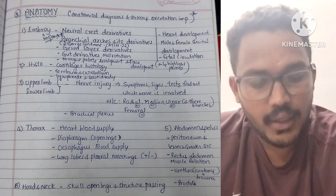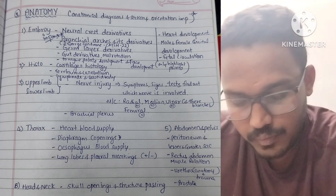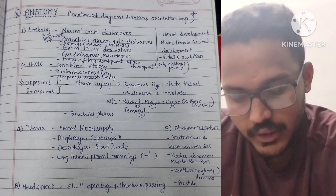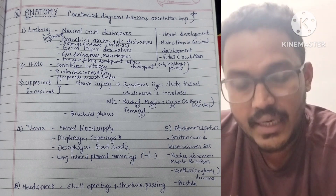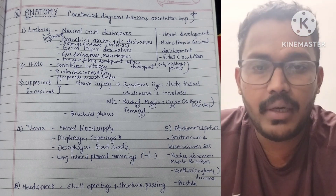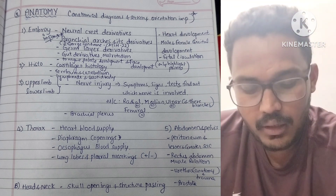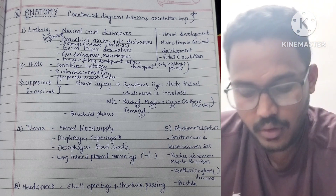In the histology part, histology of cartilages, cerebrum, cerebellum, lymph node, and carotid body histology are very important. Also important are male and female genital organ development and fetal circulation.